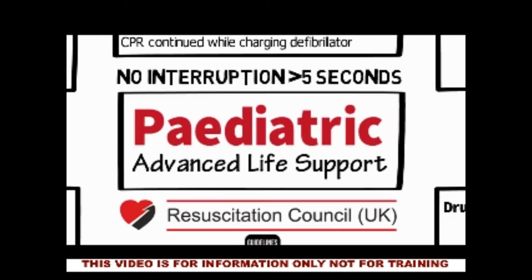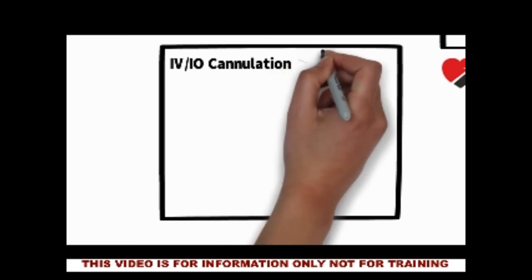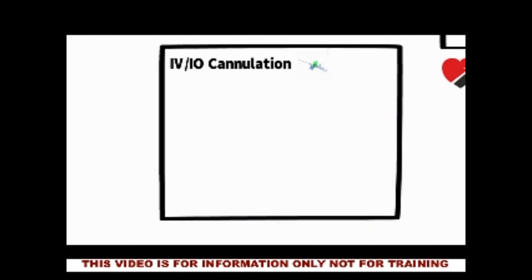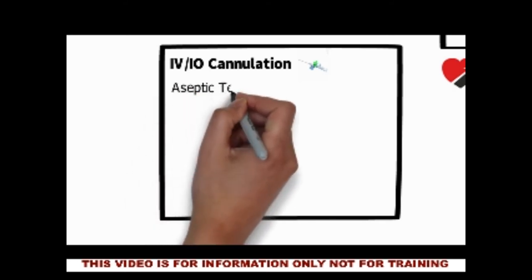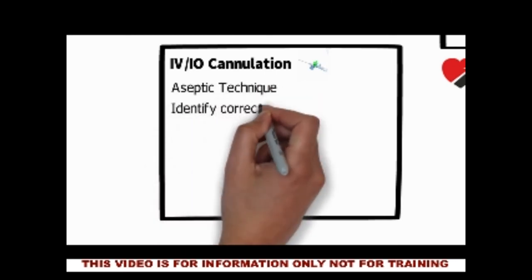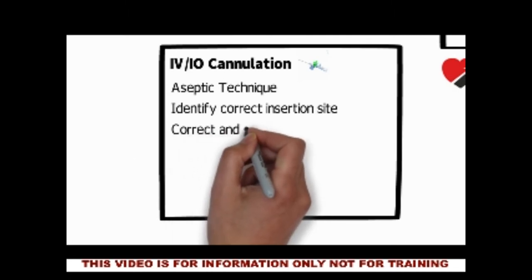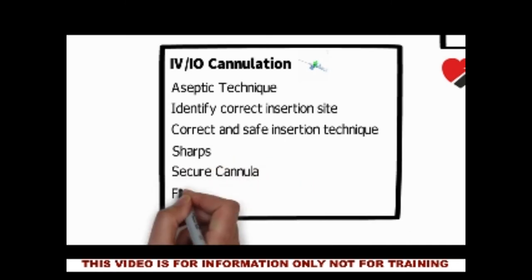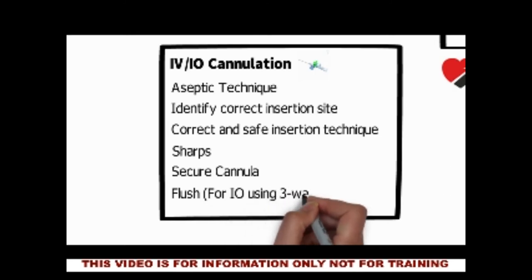For IV or IO cannulation, it is important to note that gaining rapid vascular access in children is often quickest using an intraosseous needle. This should be used in preference to an IV cannula unless a suitable IV site is immediately apparent, and we will want you to do IO cannulation in your paediatric OSCE. Key things include aseptic technique throughout, correct insertion site, correct and safe insertion technique using the EasyIO, sharps safety and disposal, securing the IO cannula, and a flush using a 3-way tap.